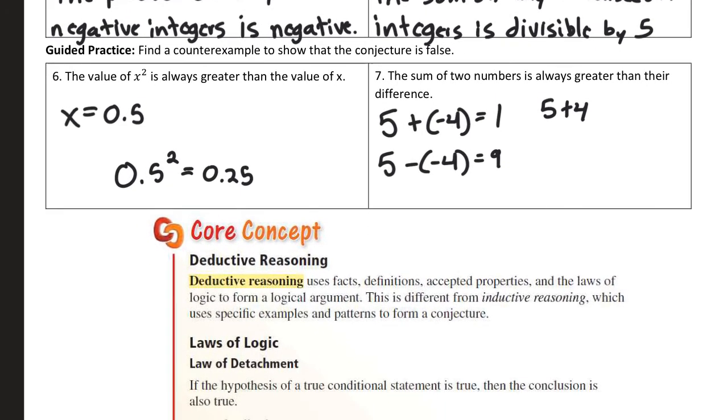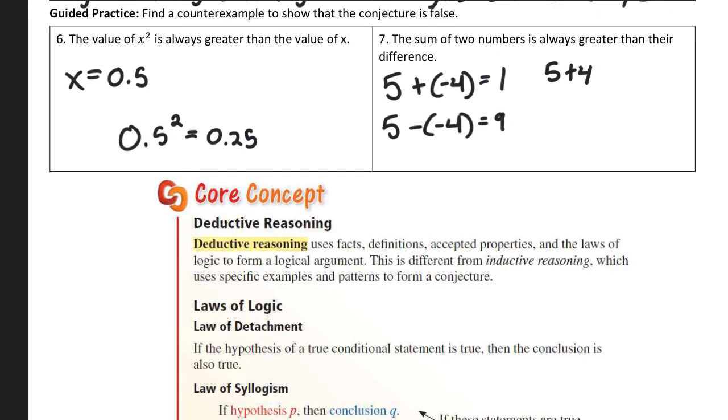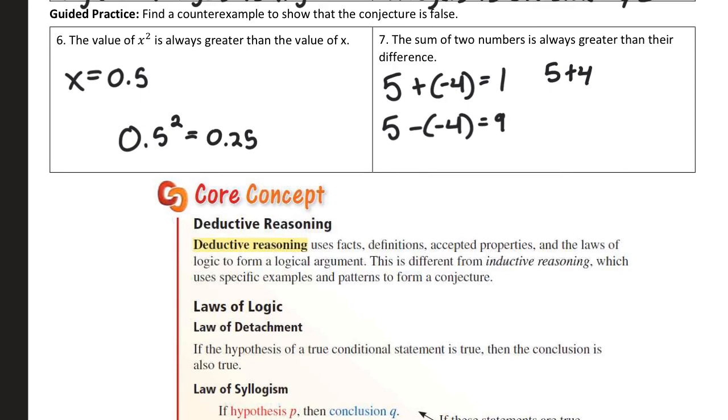For the counterexample ones, you've got to think a little bit outside the box for some of these, but for the first one, the value of x squared is always greater than the value of x. So multiplying a number by itself always gives you a greater number isn't true for numbers smaller than one. If I multiply a half by a half, it's going to be a quarter. So that means a half is not greater than a quarter, but a half squared is a quarter. So that's why this value, a half for x, proves that false.